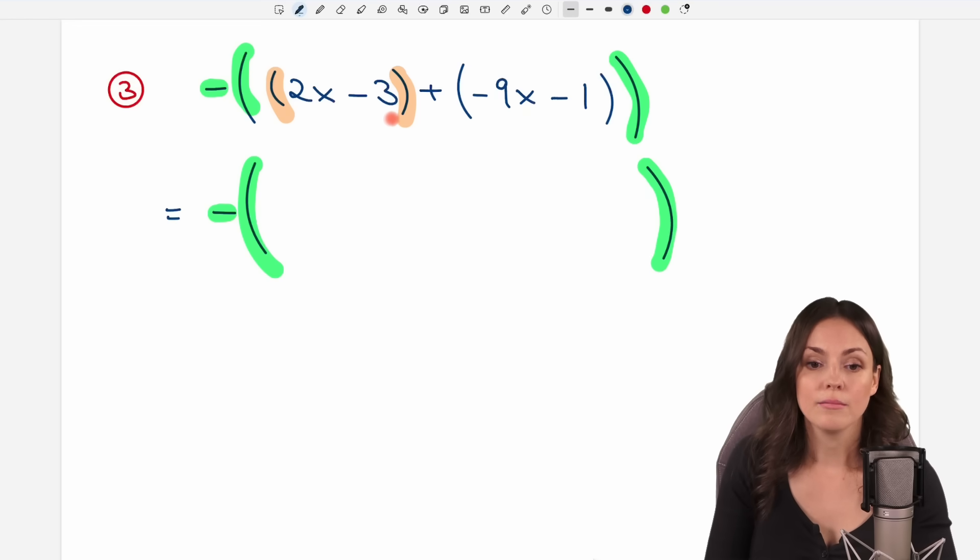First, I want to get rid of these first parentheses. How can I do that? Well, I take a look at what is in front of my parentheses. There is nothing, so it is just a plus standing here, which I don't have to write down. But as soon as you have a plus in front of your parentheses, you can just leave out the parentheses without changing anything. So I don't have to write down these parentheses at all. I just take everything that was in there, the 2x and the negative 3, and write it down without the parentheses.